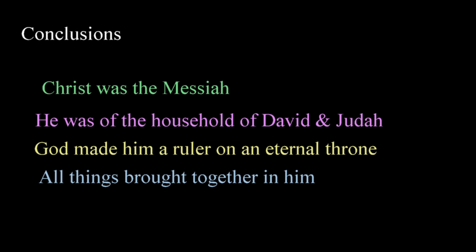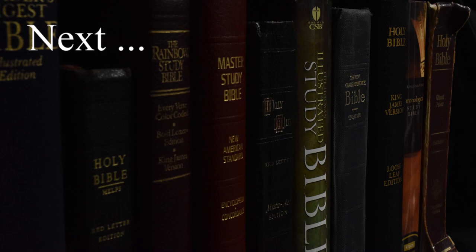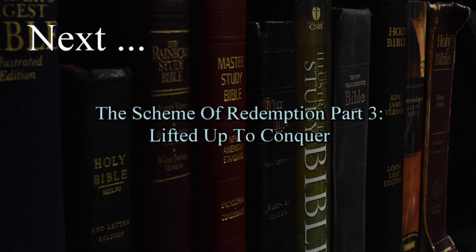As we move forward with the study, we'll develop this further and explore Christ's role as a lawgiver and the authority that he has from God. In the next video, we'll take a look at foreshadows that indicate that Christ came into the world to die, offering himself as the final and only acceptable sacrifice that could take away the sins of the world. Join me in the next video as I discuss the Scheme of Redemption Part 3, Lifted Up to Conquer.